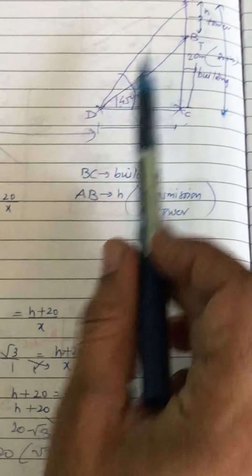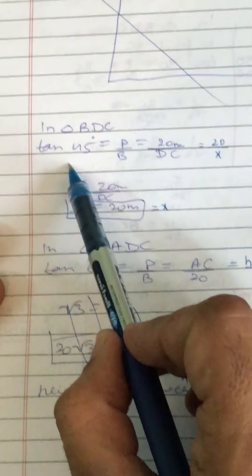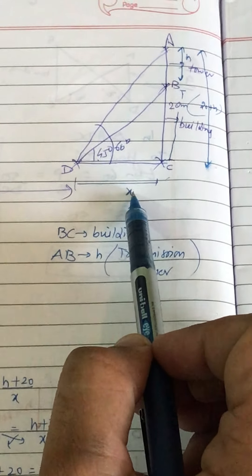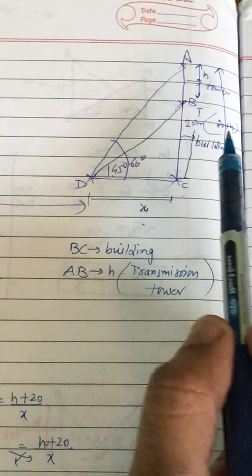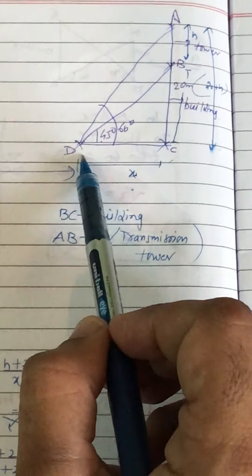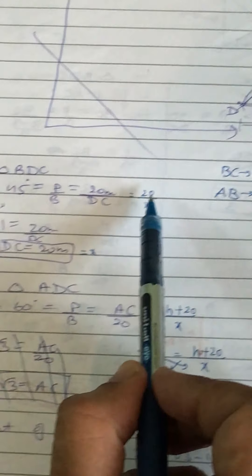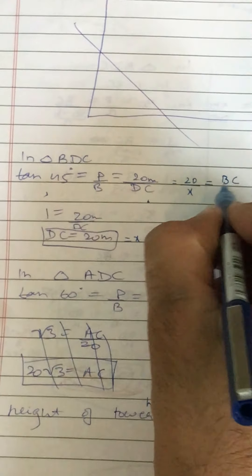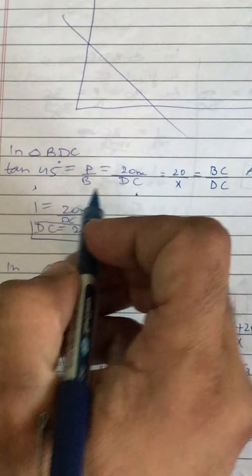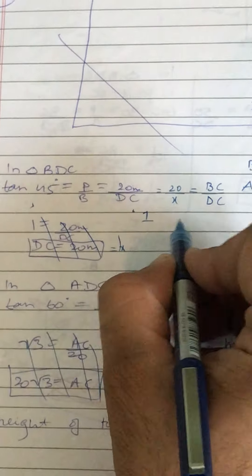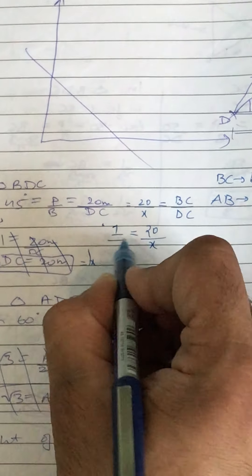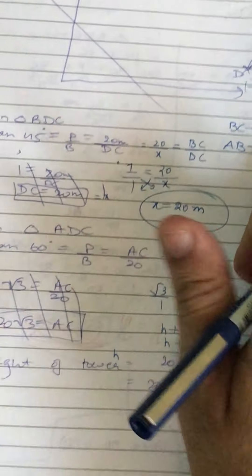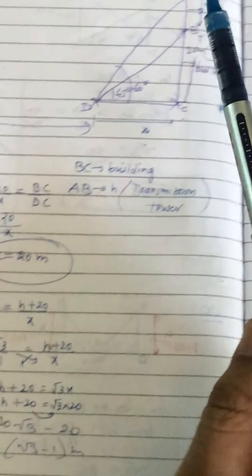Sabse pahle triangle BDC mein lagaiye tan45°. P upon B, yani BC upon DC. Aapko pata hai perpendicular upon base hota hai — perpendicular hai BC aur base hai DC. tan45° equal to BC upon DC, BC jo hai woh humein 20 given hai aur DC jo hai woh humne x assume kiya hai. tan45° ki value 1 hoti hai, to 1 is equal to 20 upon x. Cross multiply kijiye, x aagya 20 meter.